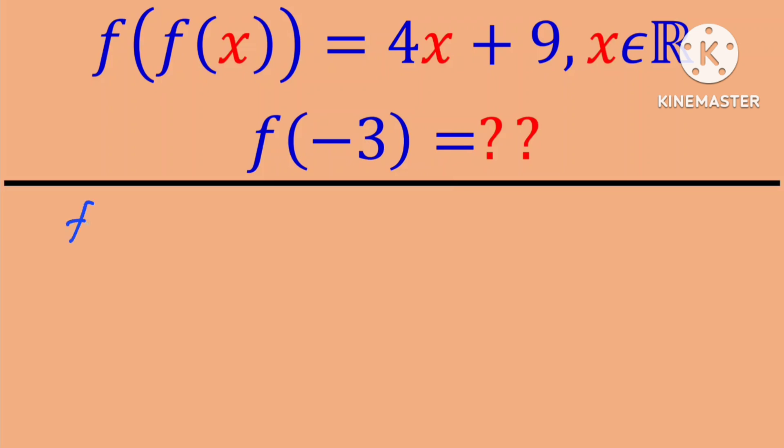But we know that f of f of negative 3 is the same as 4 times negative 3 plus 9, and this is equal to negative 3.